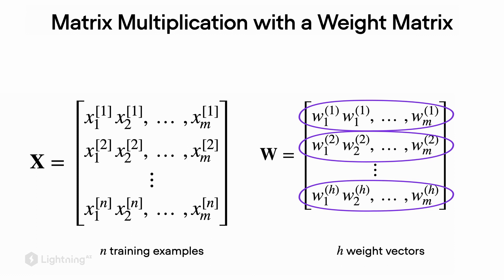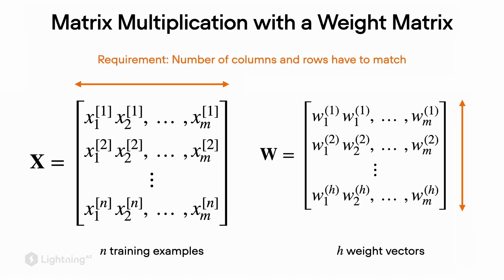In essence, you can think of this weight matrix as consisting of h weight vectors where each weight vector corresponds to one output. In order to multiply the input matrix X with the weight matrix W, we have to make sure that the dimensions match and that we are computing the right thing.